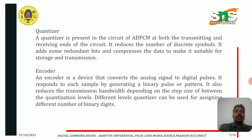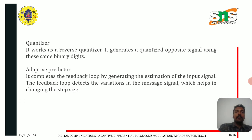An encoder is a device that converts the analog signal to digital pulses. It responds to each sample by generating a binary pulse or pattern, and also reduces the transmission bandwidth depending on the step size between the quantization levels. Different level quantizers can be used for assigning different numbers of binary digits. On the receiver side, the quantizer works as a reverse quantizer and generates a quantized opposite signal using those same binary digits.